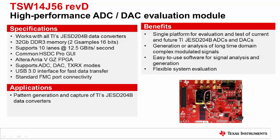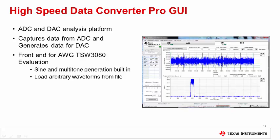The TSW14J56 is our high performance JESD204B capture and pattern generator card. It has an FPGA which is used to capture data from an ADC, or in this case as the pattern generator for our waveform generator front end. It is equipped with a fast USB 3 interface to transfer data quickly and a large DDR3 memory depth to handle up to 2 GHz samples of pattern data. HSDC Pro is the default software GUI for evaluation of ADC and DAC EVMs. It has the ability to connect and control all of our high speed capture and pattern generator cards, and can be used to perform FFT analysis as well as generate and load patterns into the memory of the pattern generators to drive our DACs.